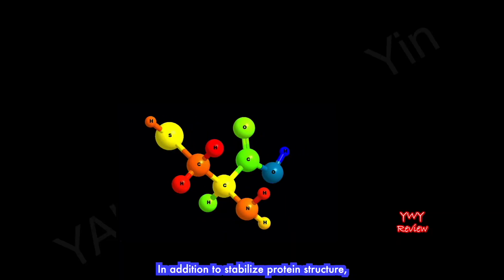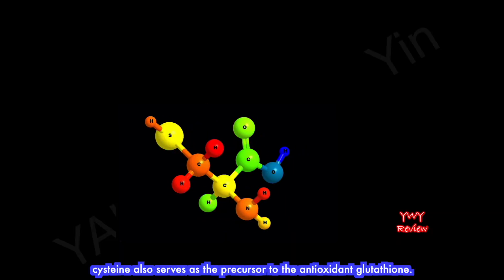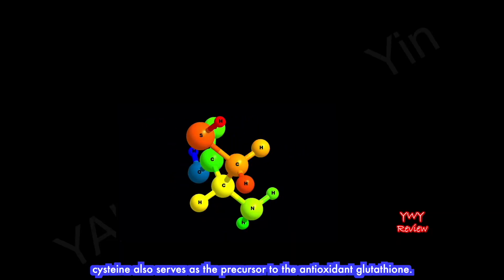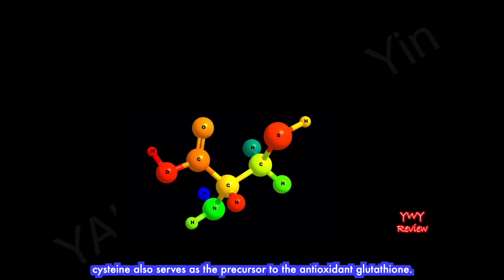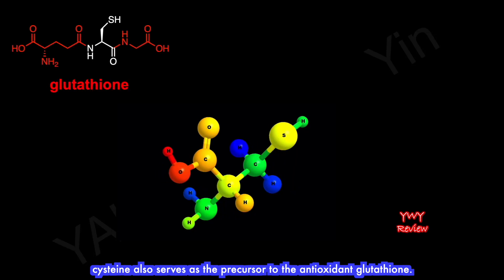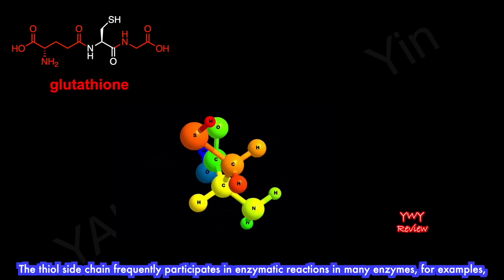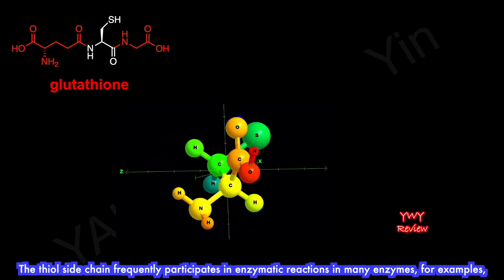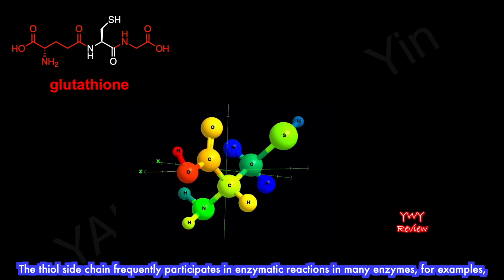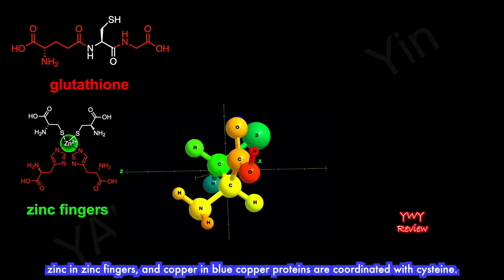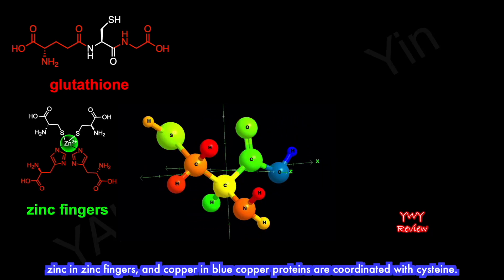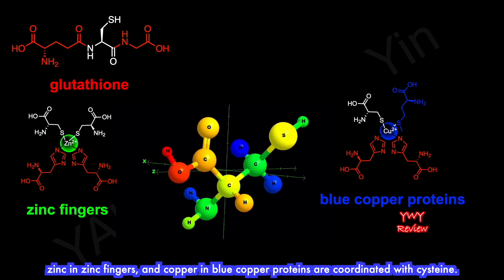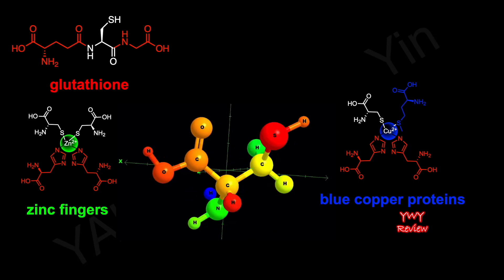In addition to stabilizing protein structure, cysteine also serves as the precursor to the antioxidant glutathione. The thiol sidechain frequently participates in enzymatic reactions in many enzymes — for example, zinc in zinc fingers and copper in blue copper proteins are coordinated with cysteine.